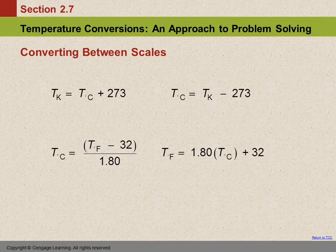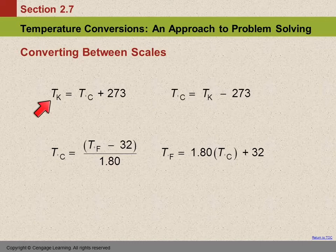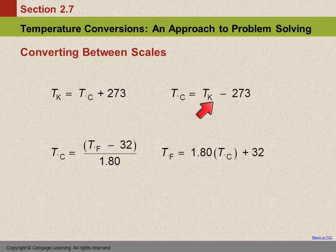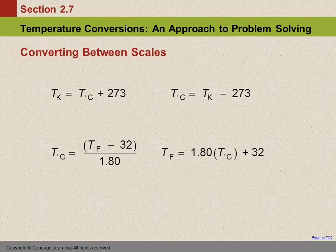To convert between temperature scales we need equations — we can't use conversion factors, we need algebra equations. I will give these to you on a page of useful information for the exam; you do not need to memorize them, just be able to use them. To find Kelvin from Celsius you add 273; to find Celsius from Kelvin you subtract 273. The conversion between Celsius and Fahrenheit is a little more complicated because the degrees are not the same size. We'll do some examples.